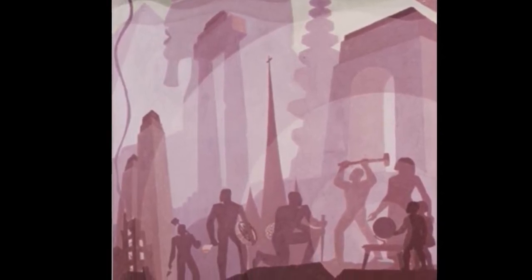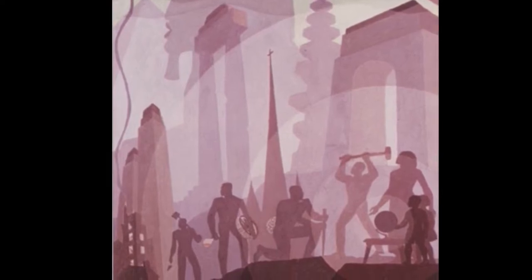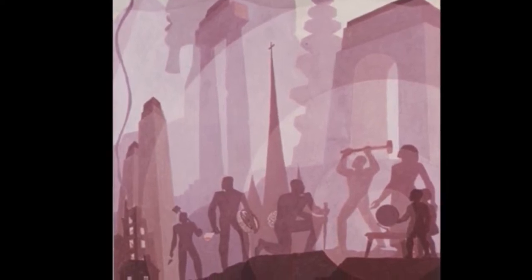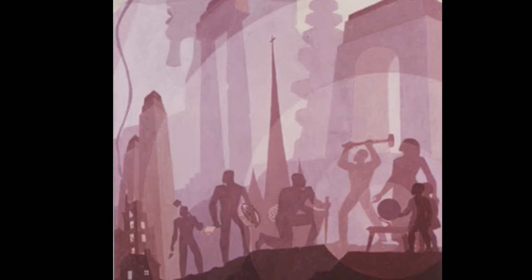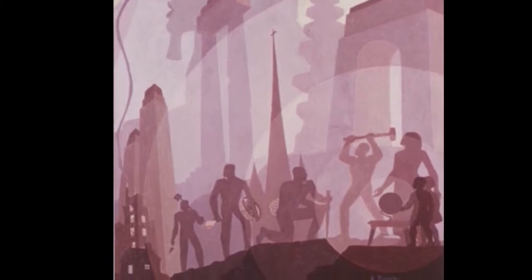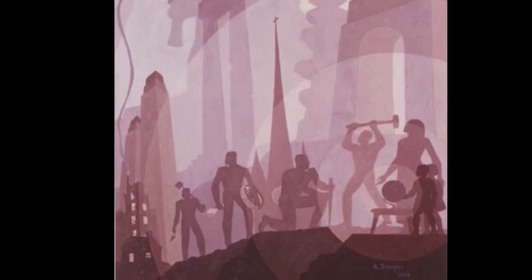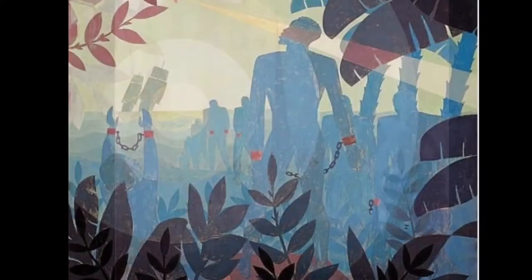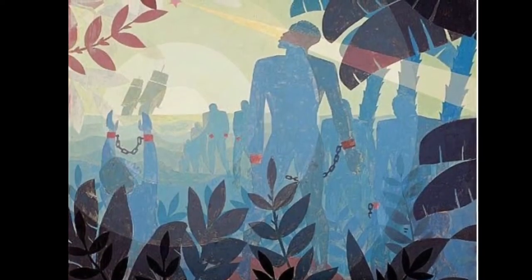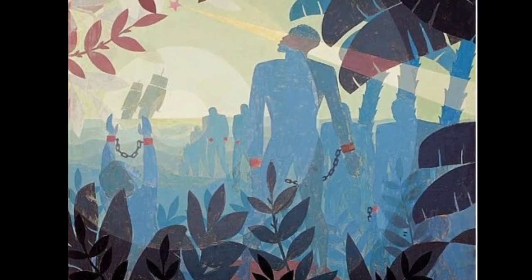He also tells the story of how the slaves came across through the Middle Passage in a lot of his artwork, showing figures that are shackled. This one, next one, actually shows the boat that is taking them across the Middle Passage.